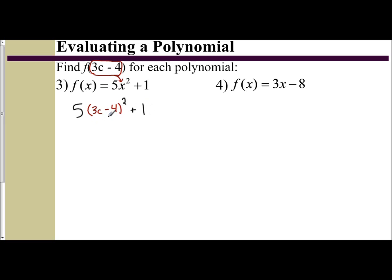Now remember, to square a binomial means you're actually multiplying it by itself. So you have (3c - 4) times (3c - 4). And then you're just distributing.